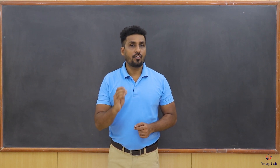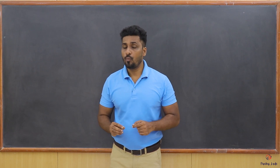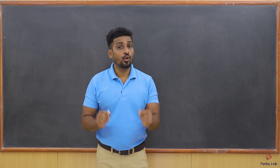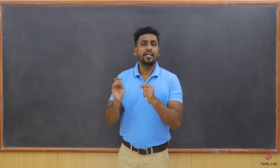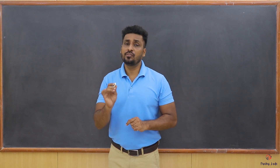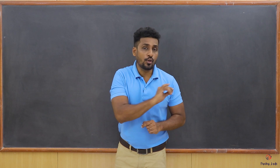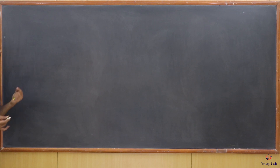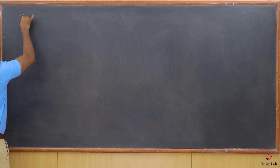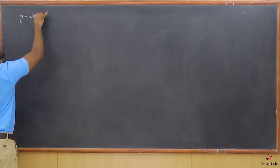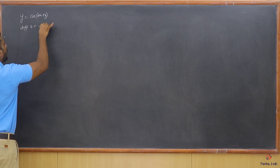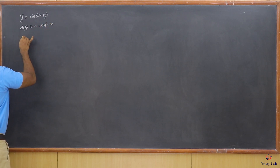Students, we are going to proceed further with the next standard form where we are going to find the nth order derivative of y = cos(ax + b). It is going to be derived on the same grounds as we derived y = sin(ax + b). So let's write the first standard form before we proceed with the solution: y = cos(ax + b), and I'm going to differentiate both sides with respect to x.